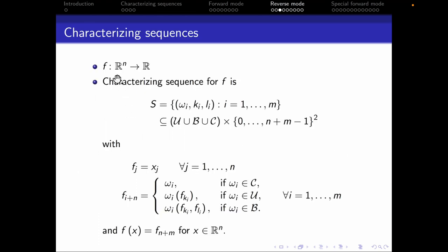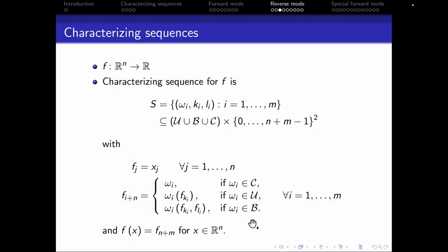What is the characterizing sequence? This is just a recap of the previous videos. If we have a function from R^n to R, then the characterizing sequence for f is a sequence of elementary operations that are unary, binary, or constant, with indices ki and li for the arguments. We make a sequence of f's where the first fj are just the variables, and the f's beyond that are the elementary operations evaluated at fki or fli. We want f(x) to equal the last of these evaluations, f_{n+m}, and we want this to be true for all x in R^n.